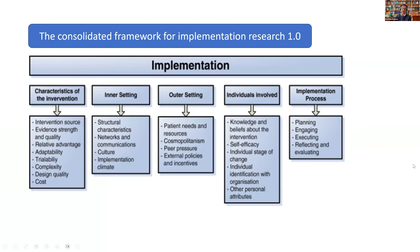This is the Consolidated Framework for Implementation Research — the CFIR. We use this one quite a lot. There's a new version, but I'm showing the first version today because it's a bit more simple. This is a determinant framework. The CFIR says all these things can affect implementation across five domains: characteristics of your intervention, inner setting, outer setting, the individuals involved, and process.